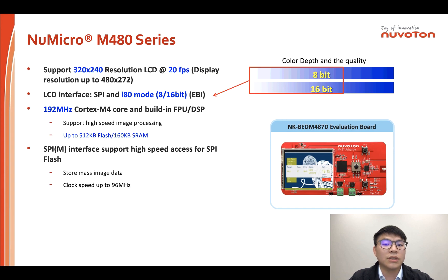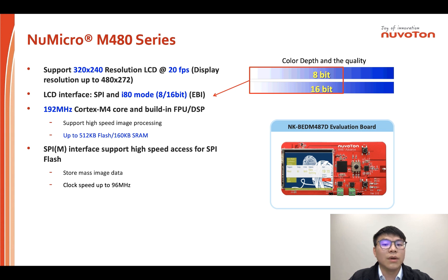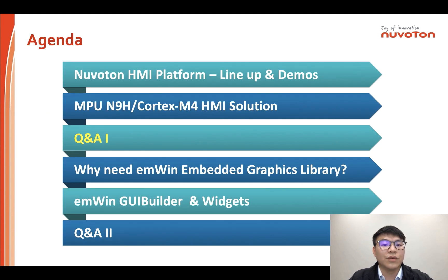The NeuVertone M4 series is based on the Cortex-M4 core and supports 320x240 resolution display. Three key points about the M4 series: first, the 192MHz core speed shortens image processing time. Second, SPIM supports high-speed SPI flash access with SPI clock speed up to 96MHz and 4-bit mode, used to store images and show them on the panel quickly. Third, EBI external bus interface supports the I80 parallel interface, giving better display performance than SPI. We will take a break; please let me know if you have any questions.